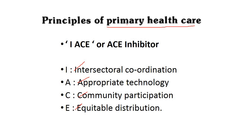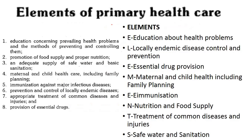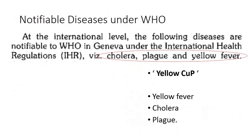Elements of primary health care can be remembered with the mnemonic ELEMENTS itself: E = Education about health problems, L = Locally endemic disease control and prevention, E = Essential drug provision, M = Maternal and child health including family planning, E = Immunization and nutrition, N = Nutrition and food supply, T = Treatment of common diseases and injuries, S = Safe water and sanitation.